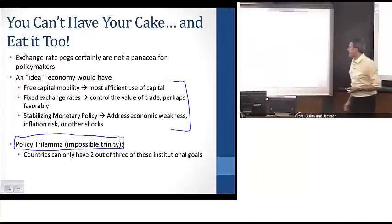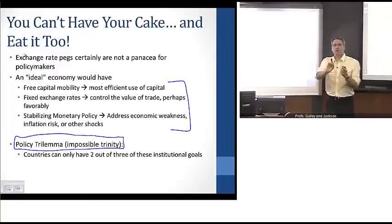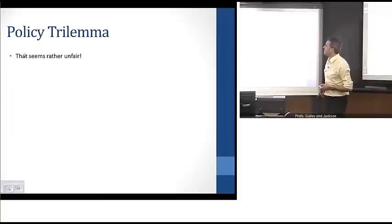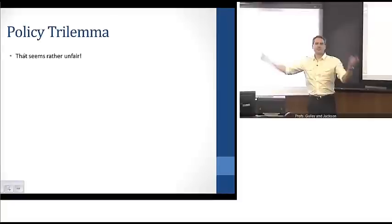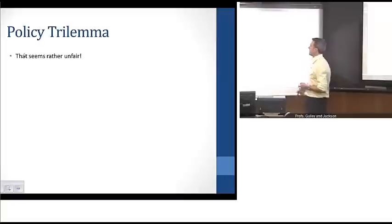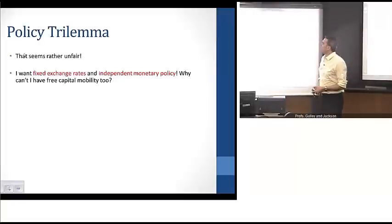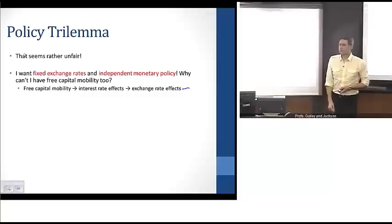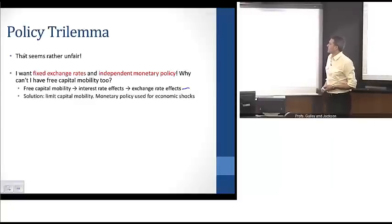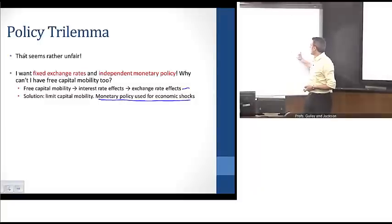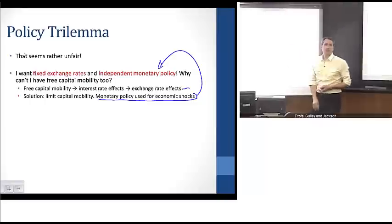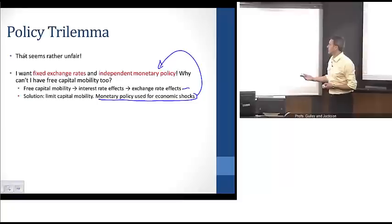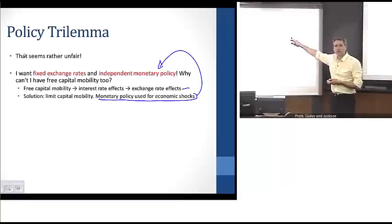This is what the policy trilemma refers to — sometimes called the impossible trinity. As policymakers, you can only choose two of those three objectives. For example, if you want fixed exchange rates and an independent monetary policy, you can't have free capital mobility as well, because free capital mobility impacts domestic interest rates and exchange rates. The only way to manage this is to limit capital mobility, since monetary policy must be used independently to address shocks to the economy.